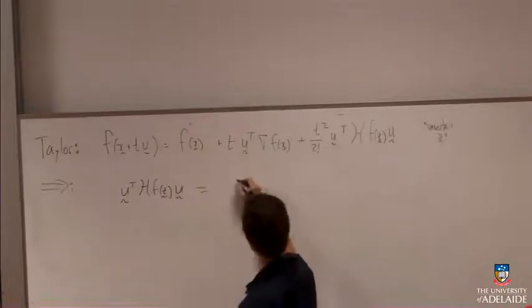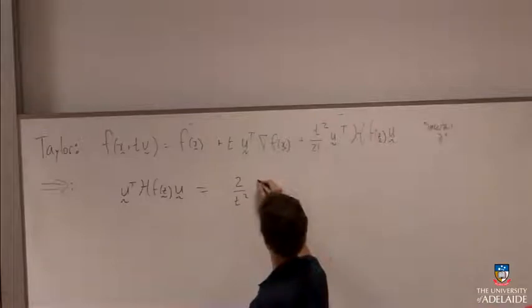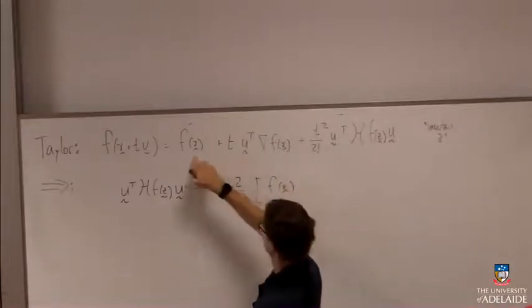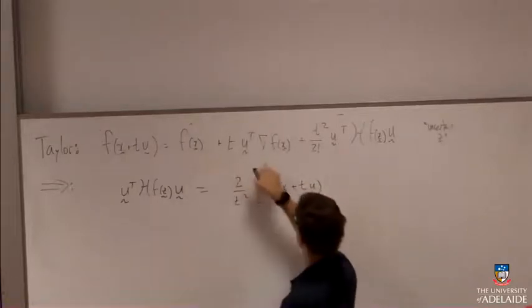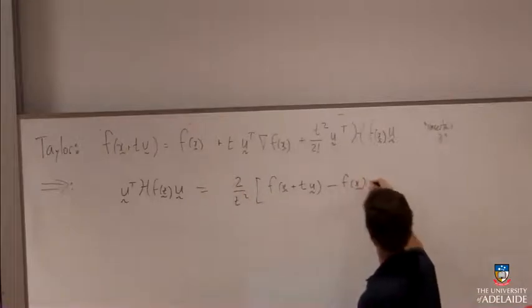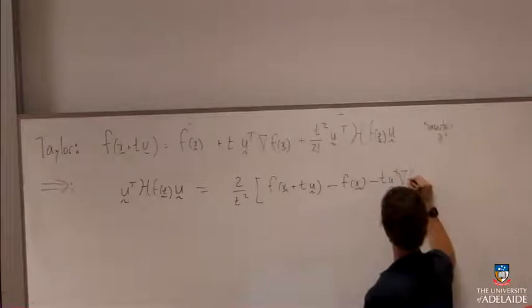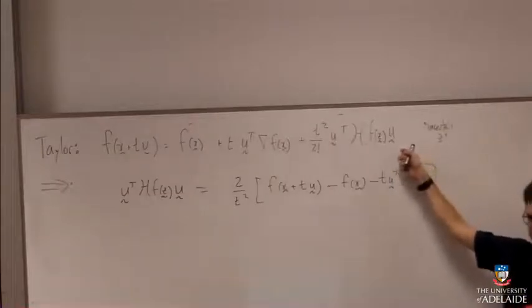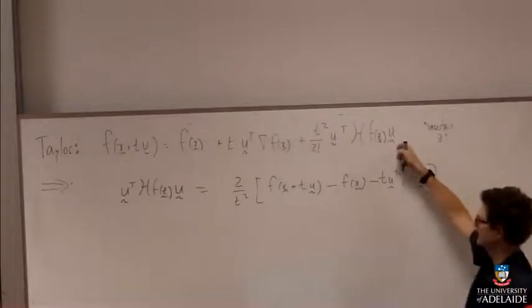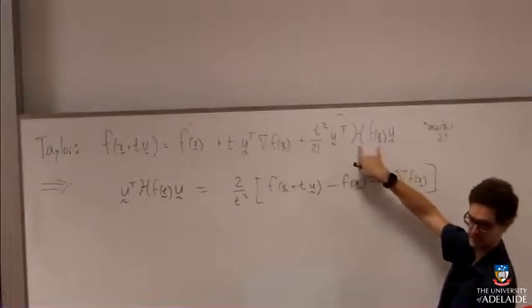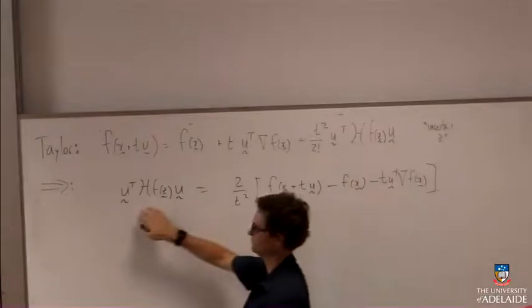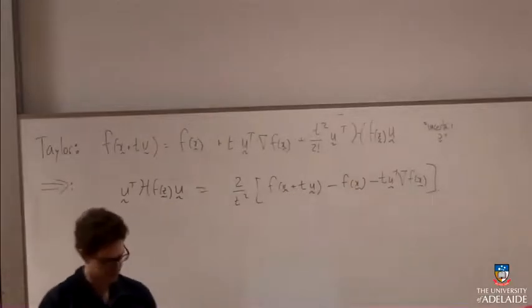So let's put everything else over onto the other side. So this is going to be 2 over t squared. And then I'm going to get f of x plus tu minus f of x, subtract that. So literally all I've done there is I've written out Taylor's theorem to one term. This is as far as you ever need to go with a Taylor series. And then I've rearranged it to make this thing that looks a lot like the definition of positive definiteness the subject.